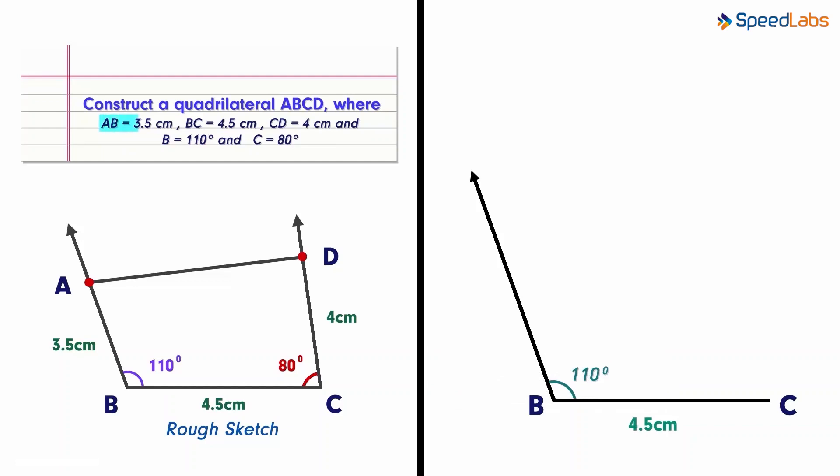The line segment AB measures 3.5 cm. Thus, from point B, we mark 3.5 cm here. What does this give us? Yes, we have our side AB now.